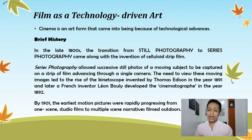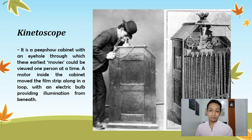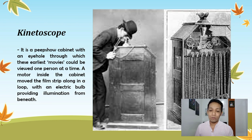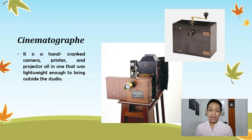The kinetoscope is a peep-show cabinet with an eye hole through which earliest movies could be viewed one person at a time. A motor inside the cabinet moved the film strip along in a loop, with an electric bulb providing illumination from beneath. The cinematograph, meanwhile, is a hand-crank camera, printer, and projector all in one that was lightweight enough to bring outside the studio.